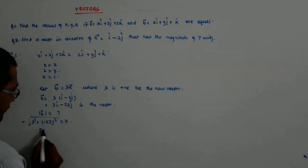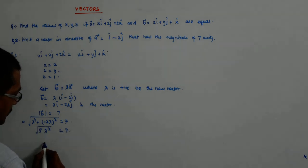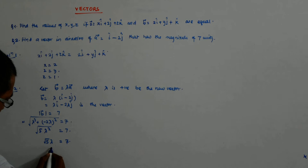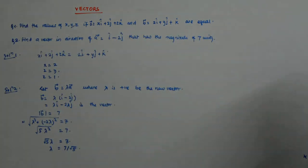So that gives me root 5 lambda is equal to 7 and that gives me lambda is equal to 7 upon root 5. Do you get that? 7 upon root 5.